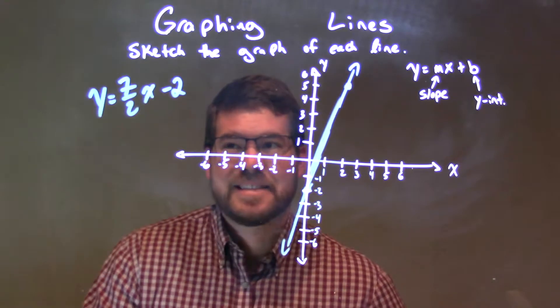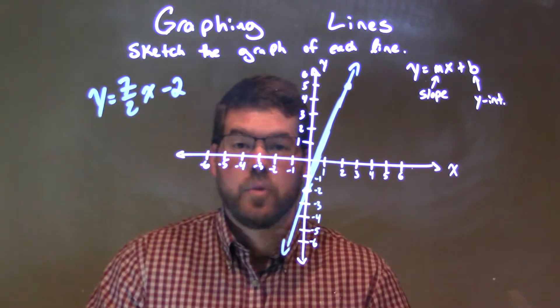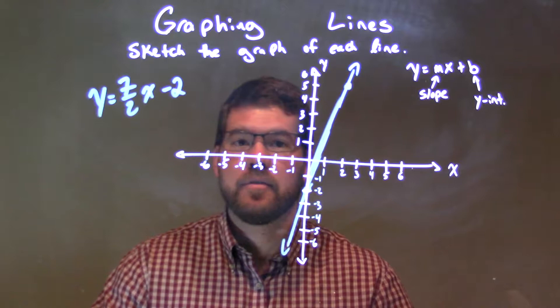And so now we have a quick sketch of our equation, y equals 7 halves x minus 2.